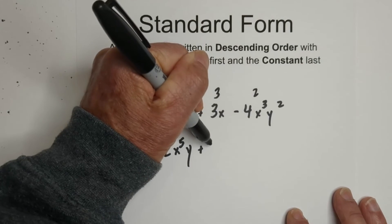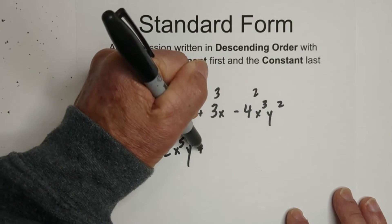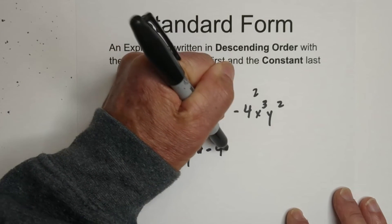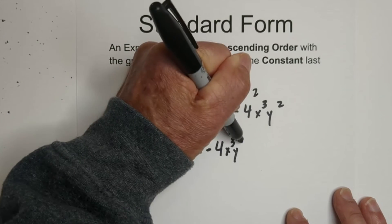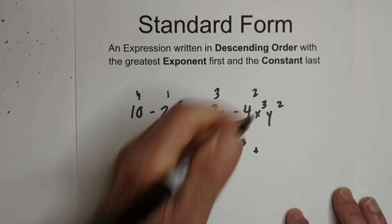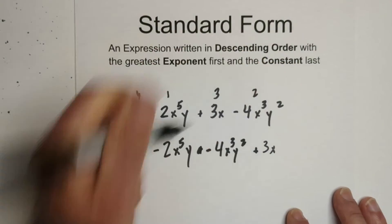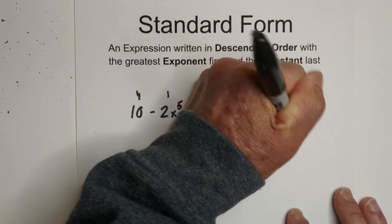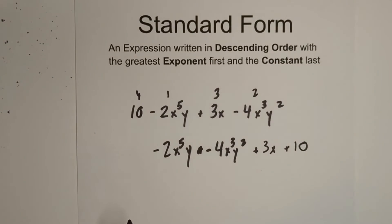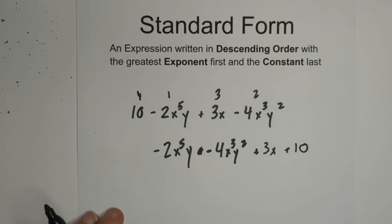Then plus, excuse me, then a negative 4x³y², then we have this, and the constant last. So there we go. Sorry, it's a little messy there with the negative sign.